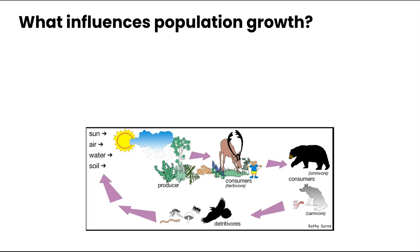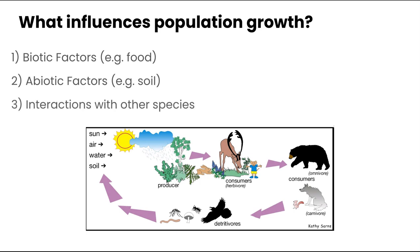Let's begin by talking about what influences population growth. Population growth is influenced by three things. The first is biotic factors, so food. Abiotic factors, such as soil — we need good soil conditions in order for our producers to grow. And then finally, interactions with other species.